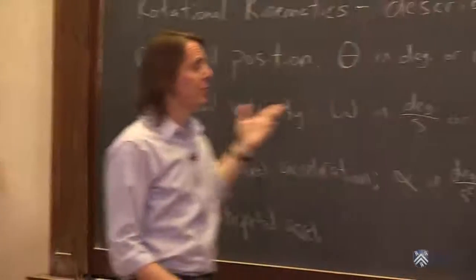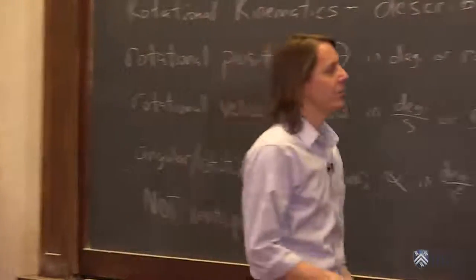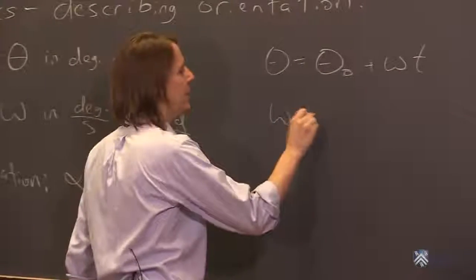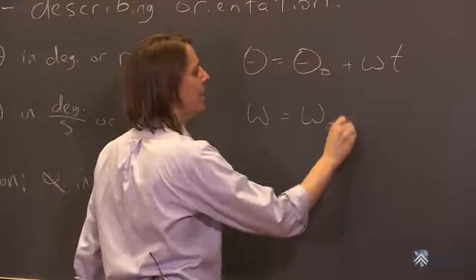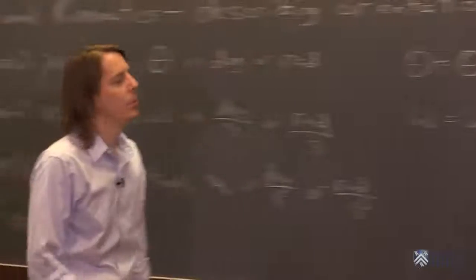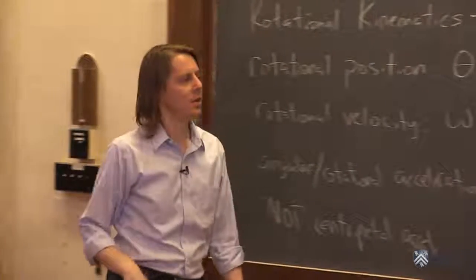You could also write what happens to omega if you have angular acceleration. Omega would be omega naught plus alpha t. We'll use these and do examples as we go.